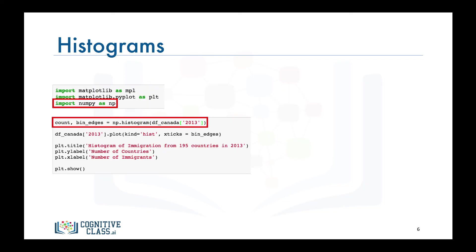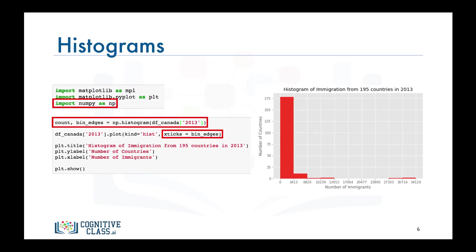We then pass these bin edges as an additional parameter in our plot function to generate the histogram. And there you go, a nice looking histogram whose bin edges are aligned with the tick marks on the horizontal axis.